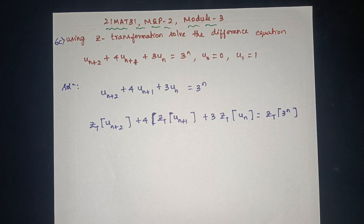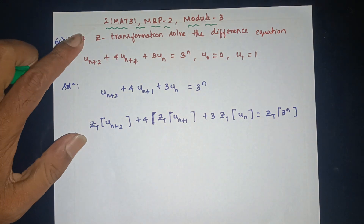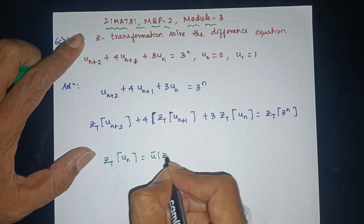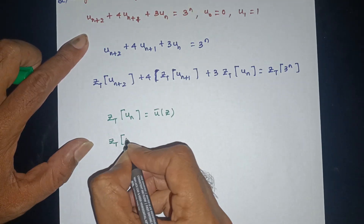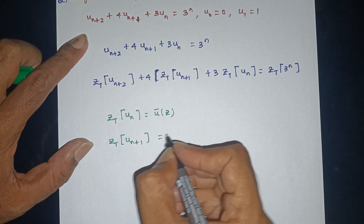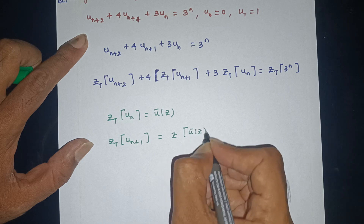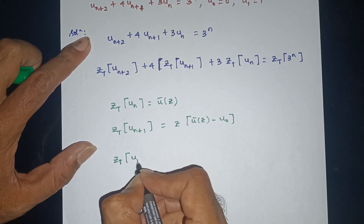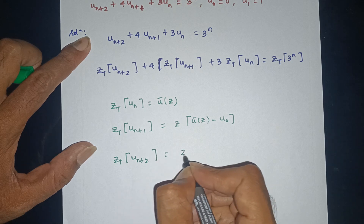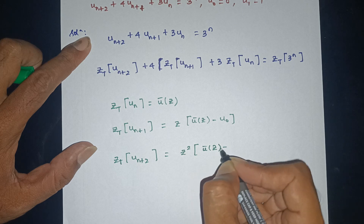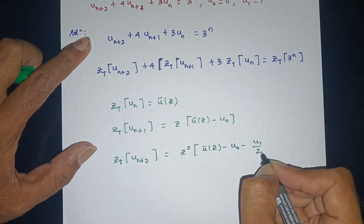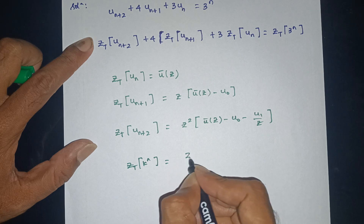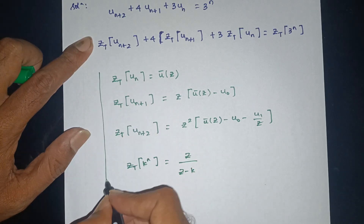We will apply the formulas. Z-transform of u(n) is equal to U-bar(z). Z-transform of u(n+1) is equal to z times U-bar(z) minus u(0). Z-transform of u(n+2) is equal to z² times U-bar(z) minus u(0) minus u(1) divided by z. Z-transform of k^n is z divided by (z minus k).